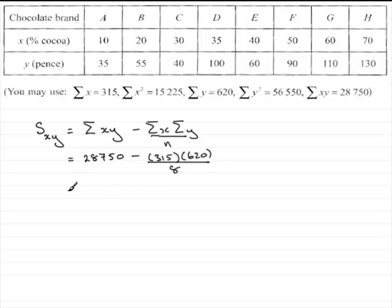If you do that division sum, say on your calculator, you end up with what you've got to show, 4337.5. Alright, so that's S of xy.